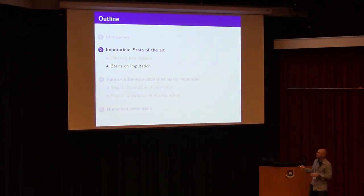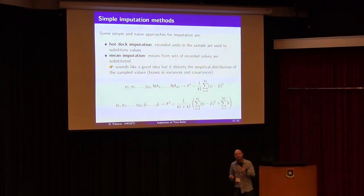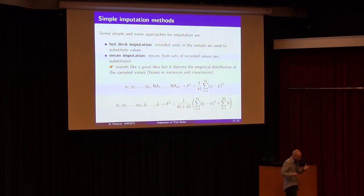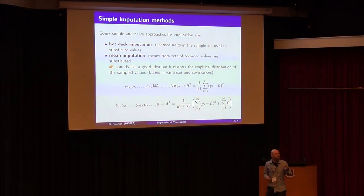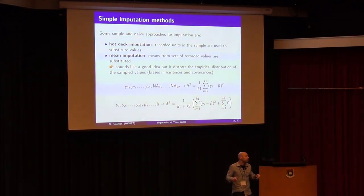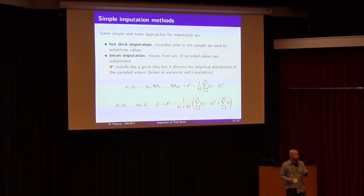Let me tell you a little about different imputation methods. Hot deck imputation is one of the oldest methods — basically, if there is a missing value, they take some other value around it and put it there. In some applications maybe it works, but in others it could be really bad. Mean imputation sounds very natural: you look at the observed values, take the mean, and put the mean in the missing values. It sounds totally reasonable, but it is really bad because it distorts all the statistics of the signal.